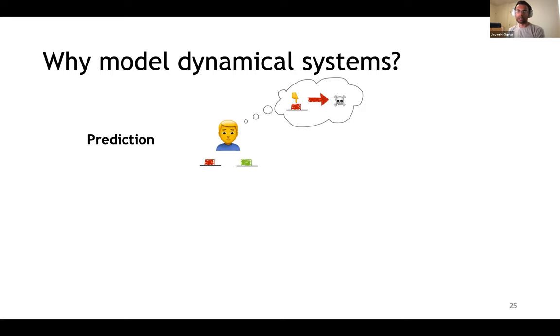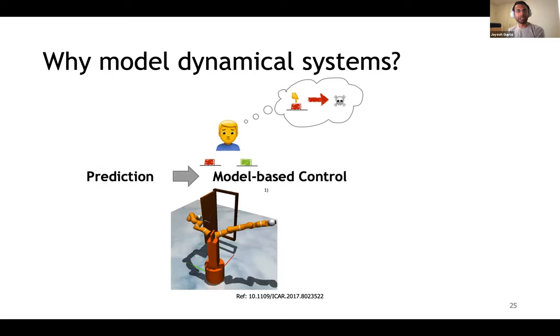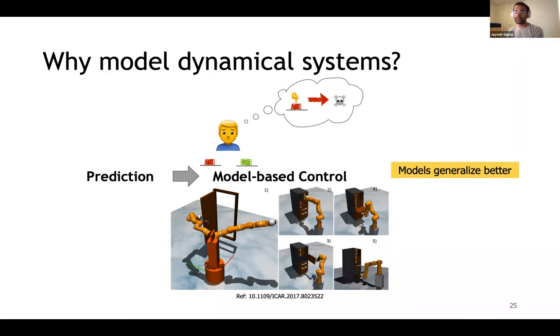There are various applications for such model predictive control, especially in robotics, where simulations of these predictions from the models can help plan trajectories for the robot. One key factor that makes model learning very enticing is that compared to learning control policies, models tend to generalize a lot better. For example, the same model of a dynamical system, that is a robot hand, can allow opening a door as well as a drawer.